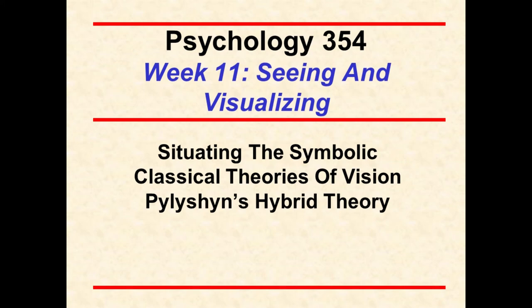Welcome to Week 11: Seeing and Visualizing. The purpose of this lecture is to explore an example hybrid theory in cognitive science. A hybrid theory includes elements of all three approaches to cognitive science: classical, connectionist, and embodied. The particular hybrid theory of interest is Zen and Pylyshyn's recent theory of seeing and visualizing.